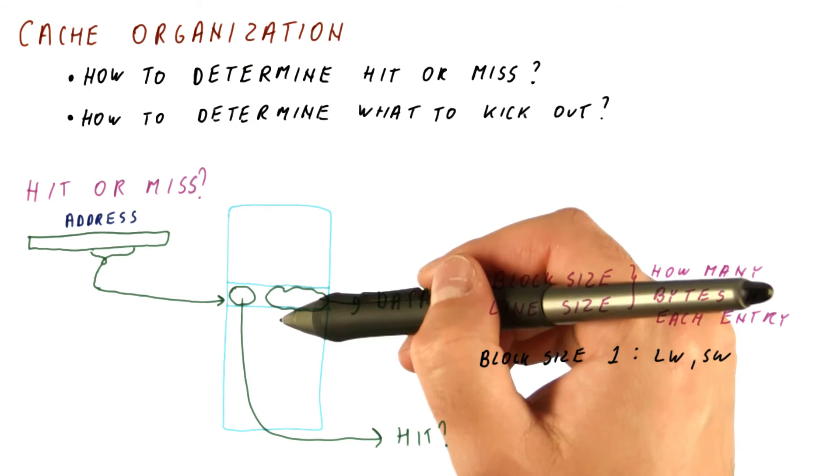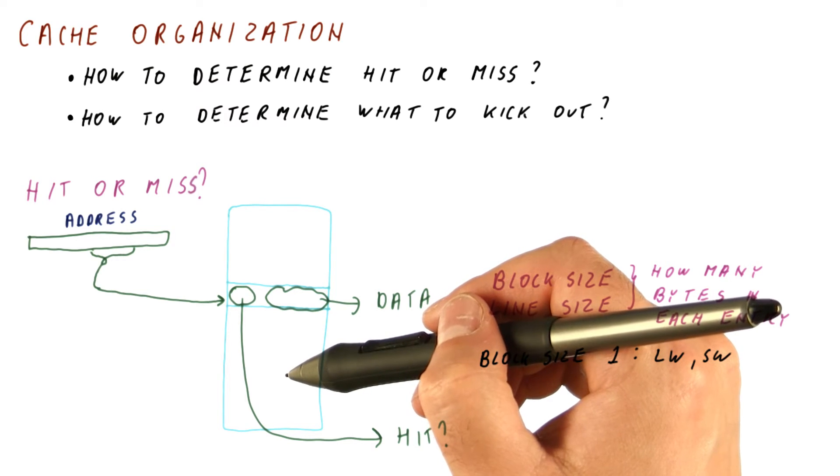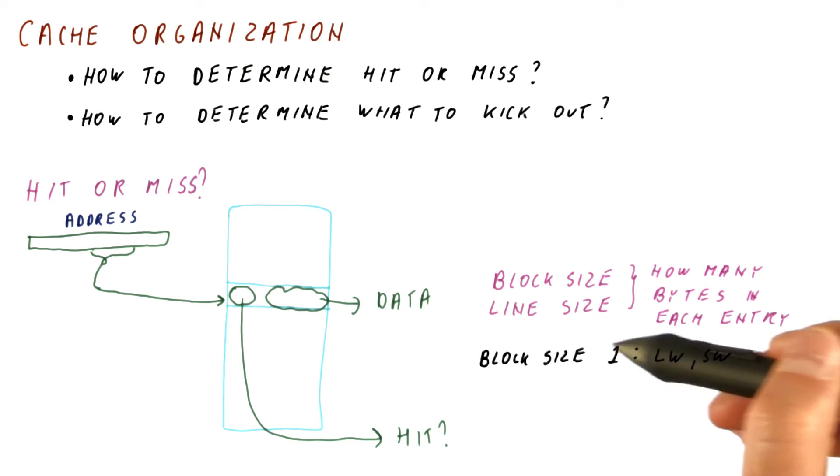So for a single access, now we would need to look up four different lines in the cache. That complicates and slows down the cache a lot, so we definitely don't want a block size to be this small.